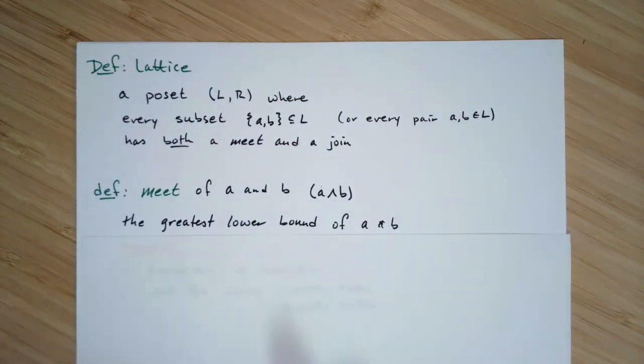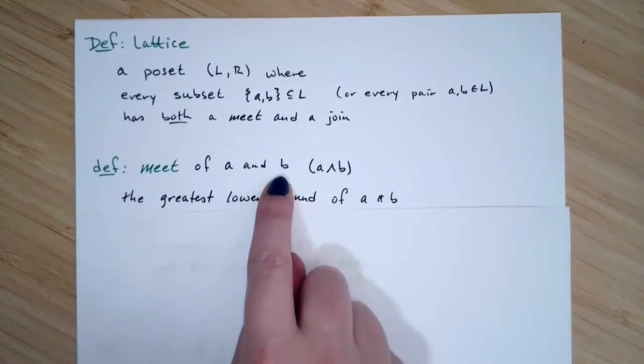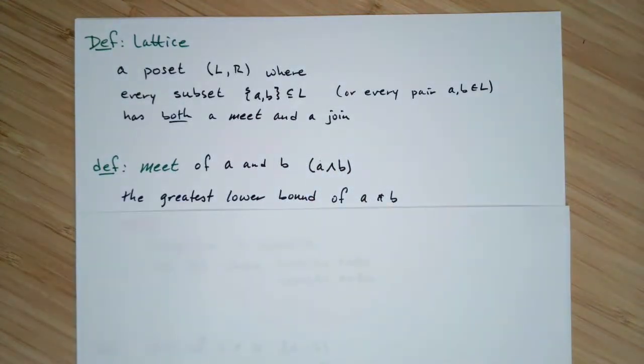So the meet of two elements A and B, where A and B are different elements in your poset, symbolically the meet looks like this. It looks like this little carrot that's pointing up between them.